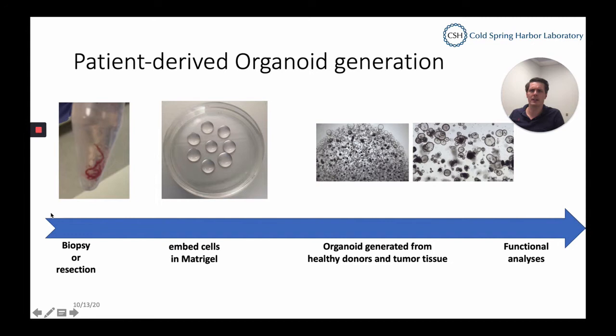Our pipeline to grow patient-derived organoids starts from a biopsy or a resection. We digest it to close to single cells. After this, we embed the cells in Matrigel and cover them with specific growth factors and medium. Once a culture starts growing and we can expand it, we do a first QC, which includes freeze and thaw cycles, before we start sequencing approaches or further downstream functional analysis.